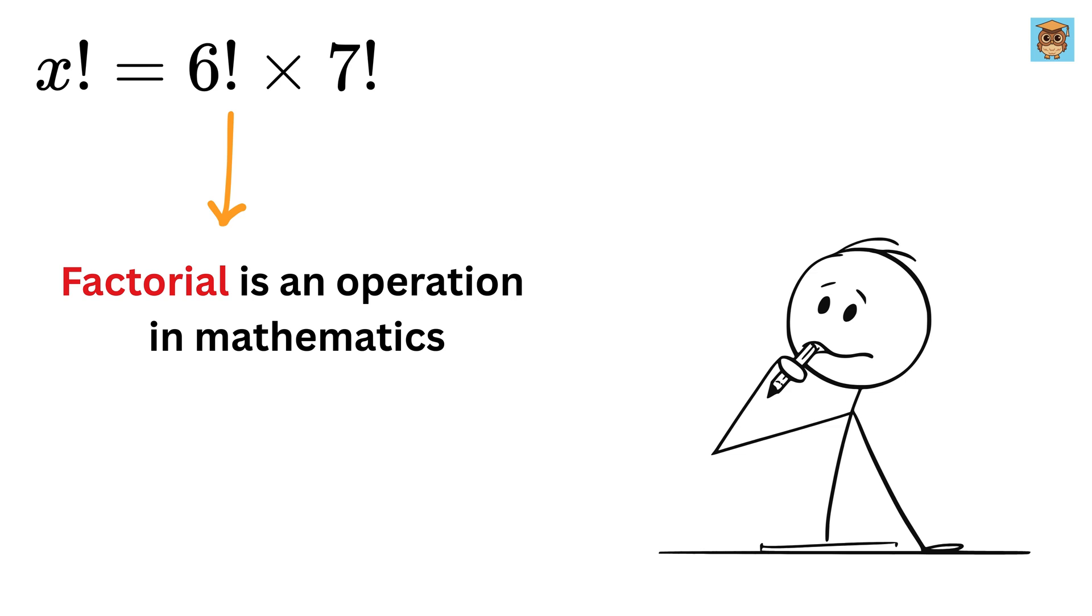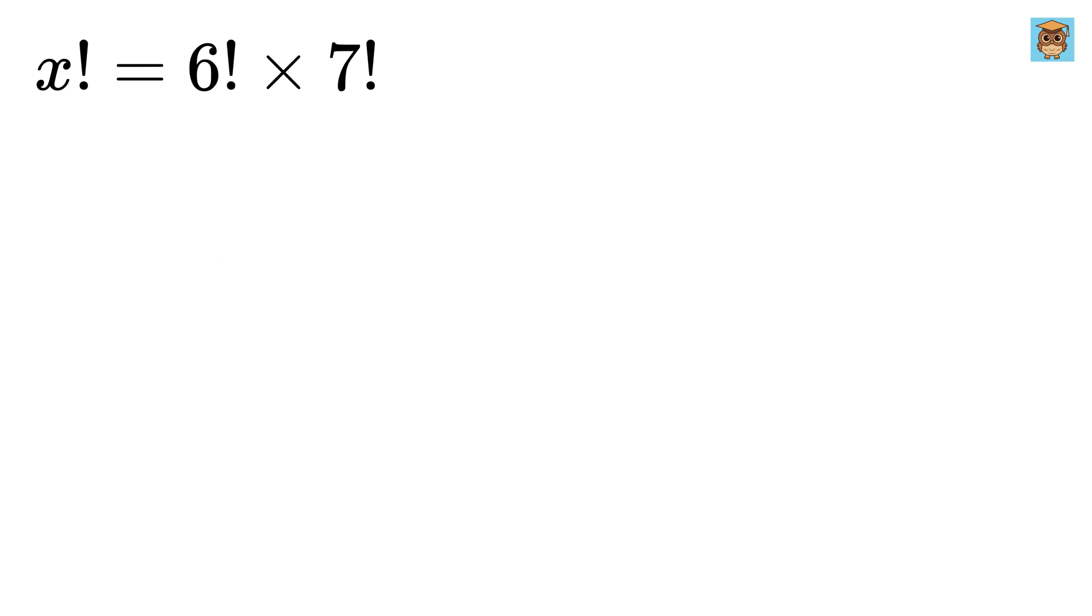So for example, 4 factorial means 4 times 3 times 2 times 1.